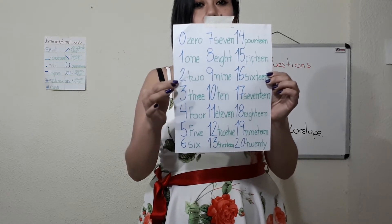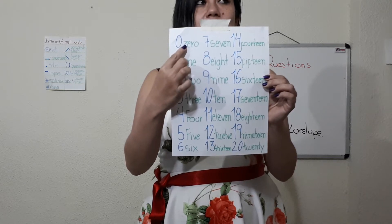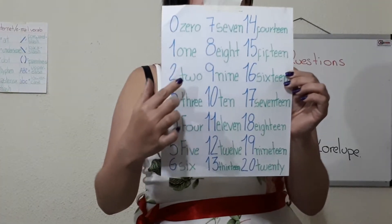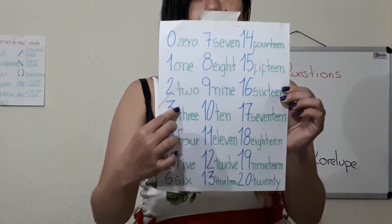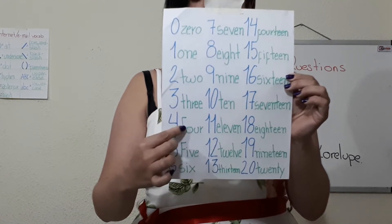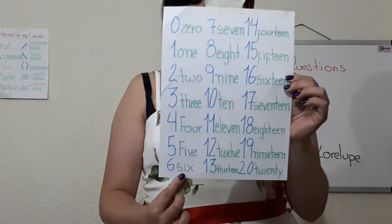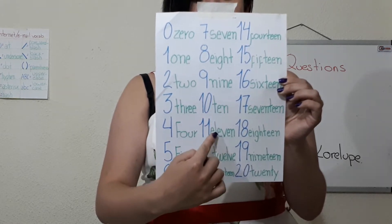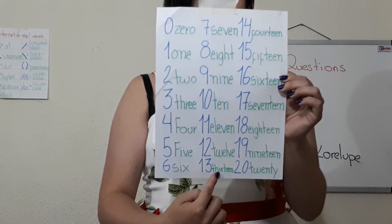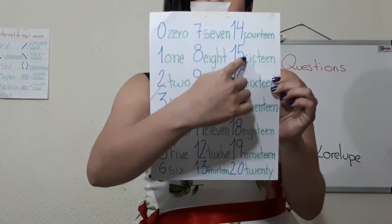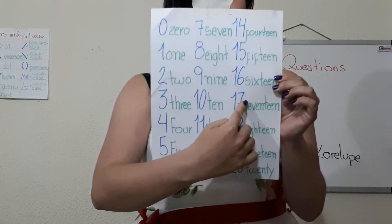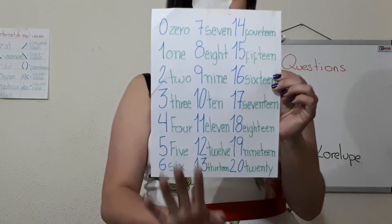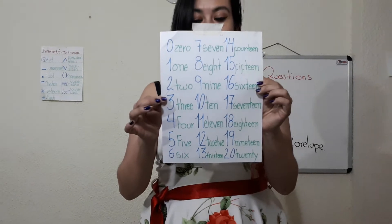So let's repeat after me. Zero — remember the buzzing sound, the 'z'. Zero, one, two, three — not 'tri' because 'tri' means tree — three, four, five, six, seven, eight, nine, ten, eleven, twelve, thirteen, fourteen, fifteen, sixteen, seventeen, eighteen, nineteen, twenty. You can say 'twenty' or 'twenty' — remember the pronunciation.